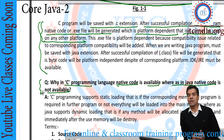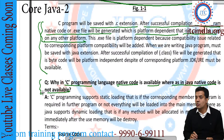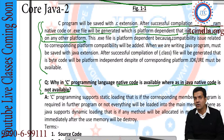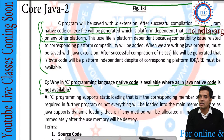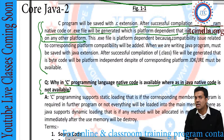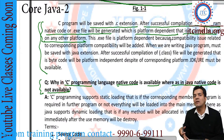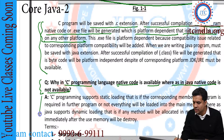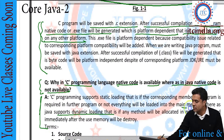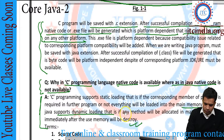In the case of C programming language, it generates native code because C language supports static loading, whereas Java supports dynamic loading. This means that in C language, whatever it generates stays as it is, whereas in Java it generates the code, uses it, and after use it destroys it completely. The same thing is written in the theory part here — Java supports dynamic loading where the memory is managed dynamically.